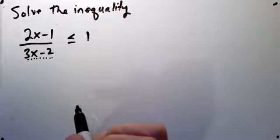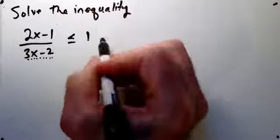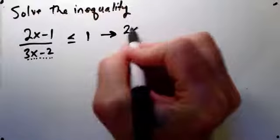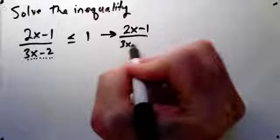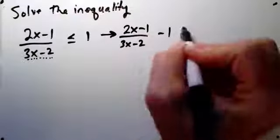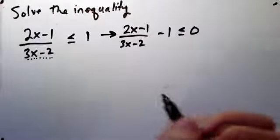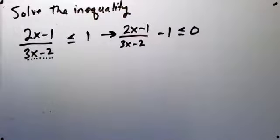But one way to proceed that always works with inequalities is to compare everything to zero. So what we're going to do here is subtract 1 from both sides, get a common denominator.